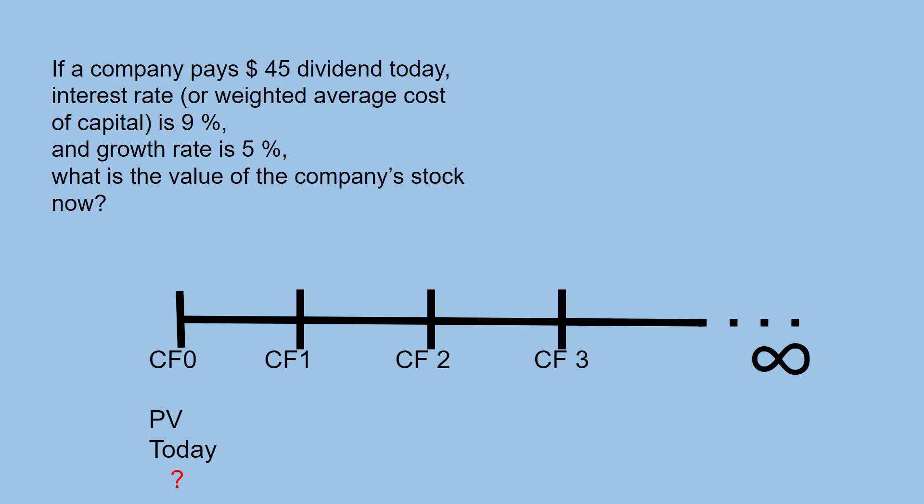If a company pays a $45 dividend today, the interest rate or weighted average cost of capital is 9%, and the growth rate is 5%, what's the value of the company's stock now?